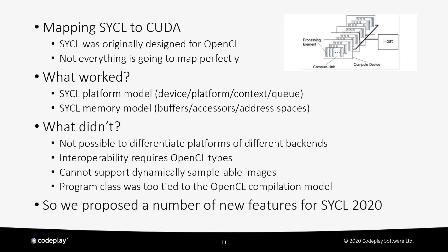What didn't work so well? After introducing a new backend, there was no way to differentiate between platforms from different backends. Interoperability also wouldn't work as it required OpenCL types. SYCL 1.2.1 images couldn't be supported as-is because CUDA cannot support dynamically sampleable images like OpenCL can — in CUDA you have to specify the sampler when you create the image. Finally, the program class was tied too closely to the OpenCL compilation model. From this experience, we proposed new features for SYCL 2020 to tweak the API to allow CUDA to be a fully supported backend while not deviating from what made SYCL what it is.